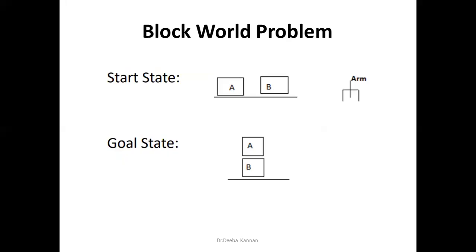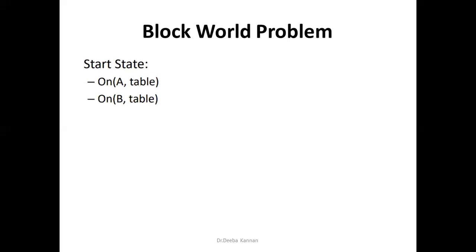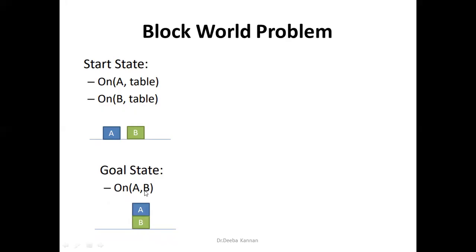Here is a planning example. The starting state is: blocks A and B are both placed on the table, and the arm head is empty. The goal state is: B is on the table and A is placed on top of B. Using backward chaining, to achieve on(A, B) I need to call the stack function stack(A, B), which places A on top of B.